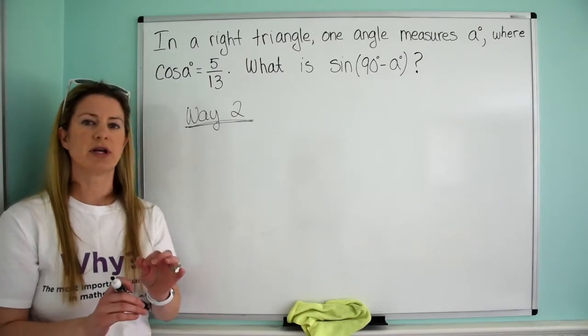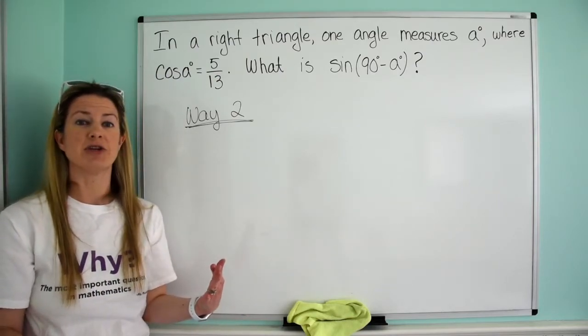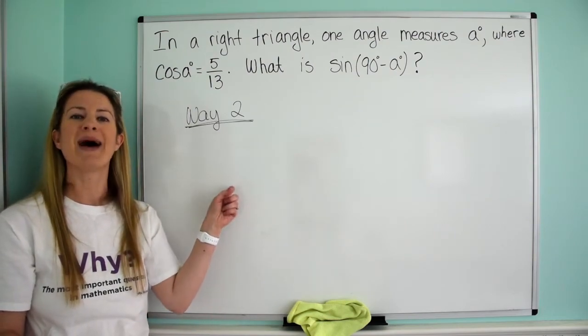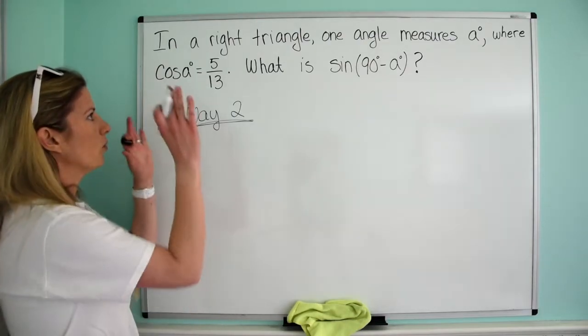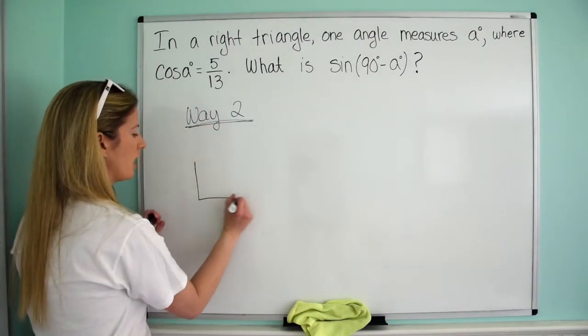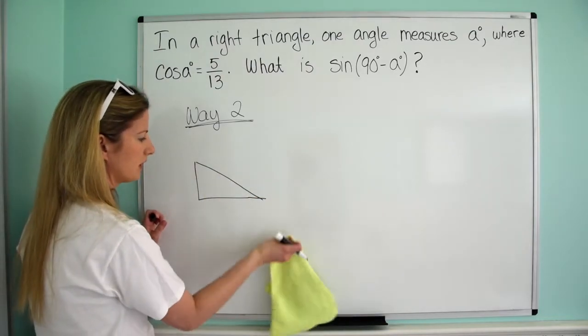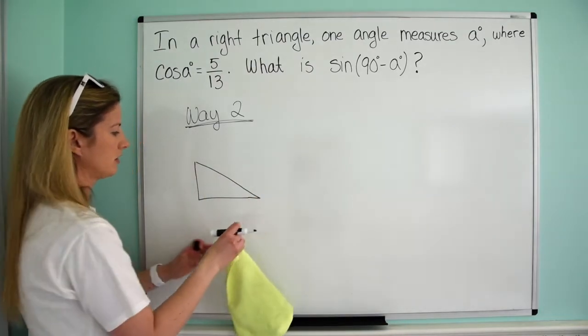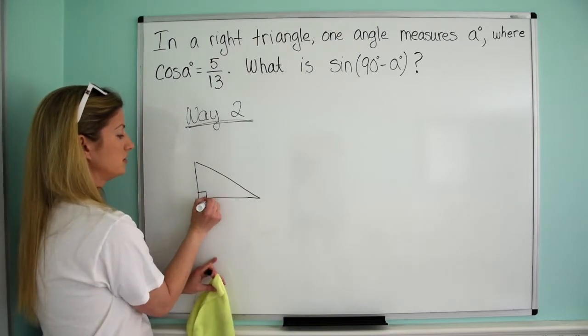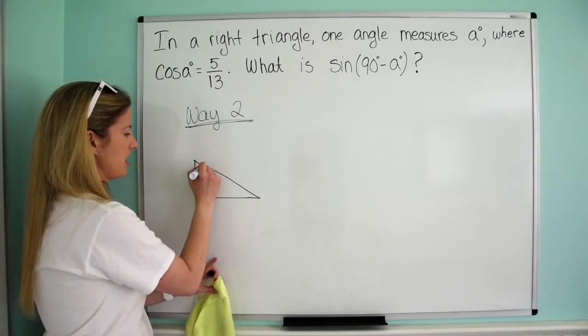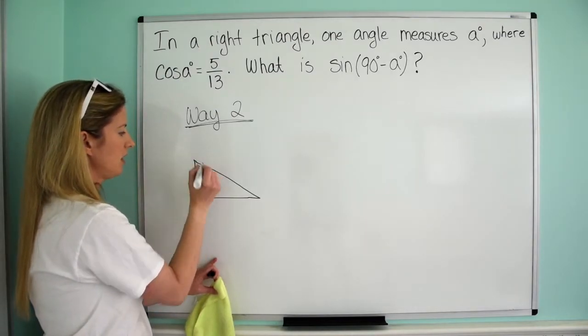Way two is a little bit more intuitive. We're kind of thinking about what's really going on behind the scenes. We're drawing a picture. Way two will always work. It'll take a little longer, but it'll always work. So another option you can have is you could do way one, quickly mark down an answer, and then if you have time, come back to this problem and do it way two. So we've got a right triangle. Draw a picture. Love it. Here's my right triangle.